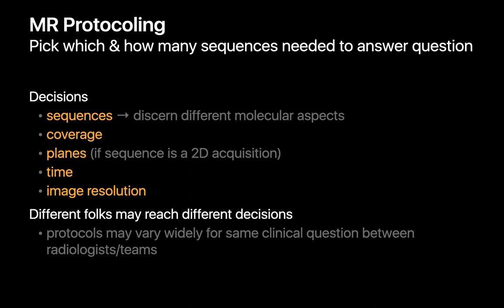Good MR protocoling requires the radiologist to pick which sequences and how many are needed to answer the question efficiently and effectively. We have to decide which sequences to use, whether a sequence will capture enough territory or needs to be run twice, which planes sequences need to be run in if acquired two-dimensionally, how our choices affect study duration, and how image resolution will affect our ability to answer the question. With so many factors, different radiologists may come up with slightly different answers — that's why MR protocols for the same body part can vary between radiologists and practices.